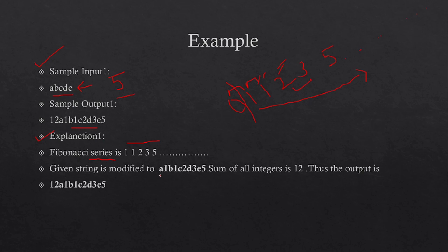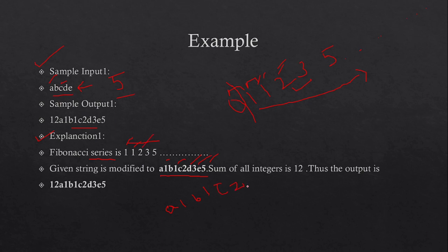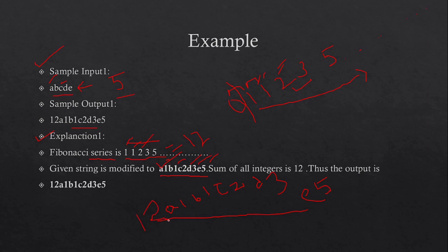After that you insert these numbers into your input string. First, take character 'a', then take the first number from the Fibonacci series — 1. Then character 'b', then the second number — 1. Then 'c', then 2. Then 'd', then 3. Then 'e', then 5. You get this modified string, and if you add all these numbers — 1+1+2+3+5 — you get 12. Add this 12 at the beginning of your final output.